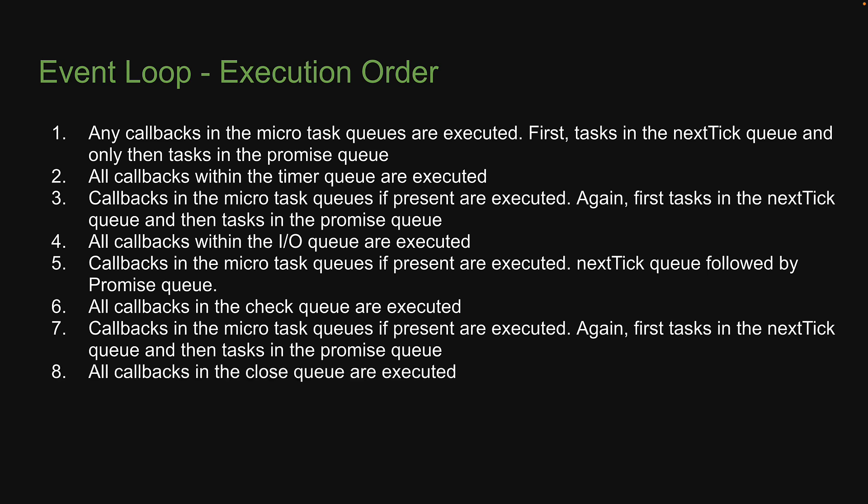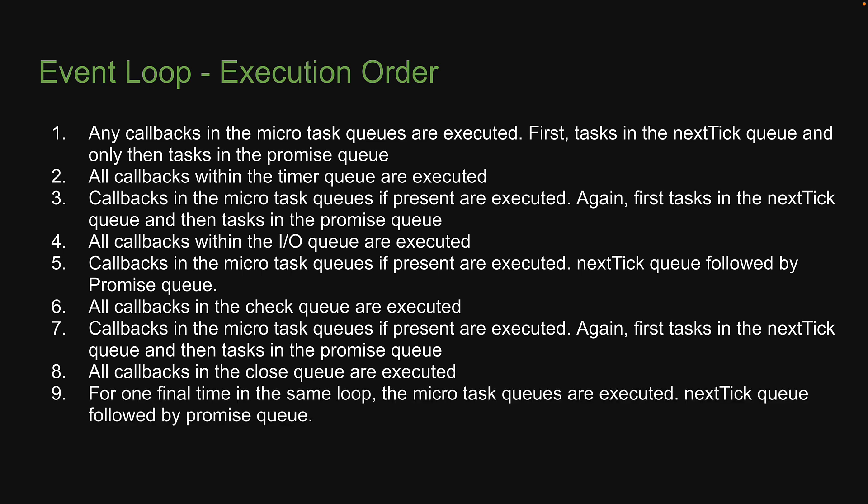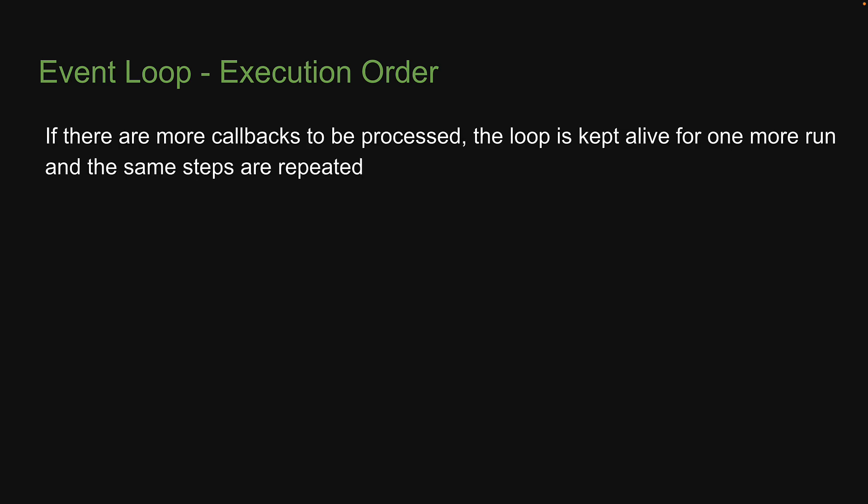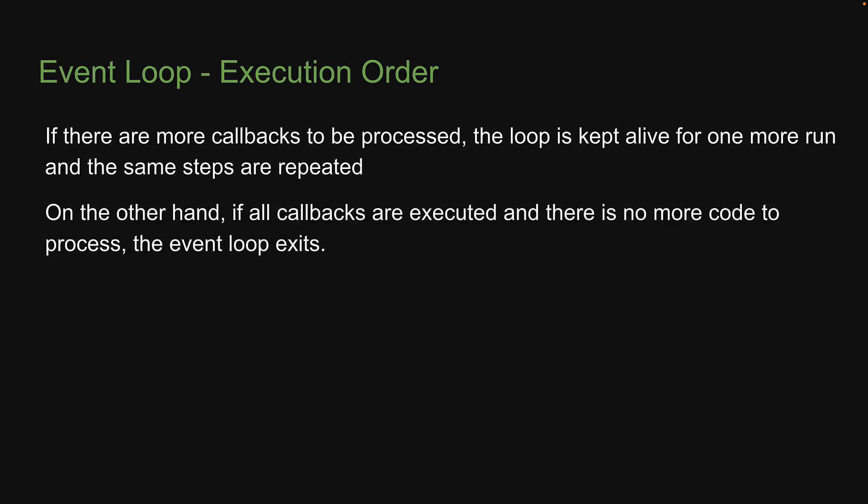Step 8: All callbacks in the close queue are executed. Step 9: For one final time in the same loop, the microtask queues are executed — nextTick queue, followed by promise queue. At this point, if there are more callbacks to be processed, the loop is kept alive for one more run and the same steps are repeated. On the other hand, if all callbacks are executed and there is no more code to process, the event loop exits.